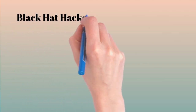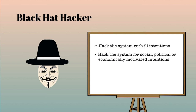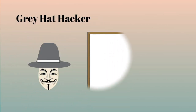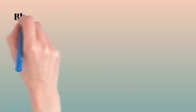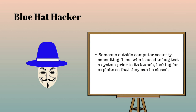Blackhat hackers — in contrast to whitehat, blackhat hackers hack the system with ill intentions for social, political, or economically motivated purposes. They identify security loopholes and keep the information to themselves, exploiting the system for personal or organizational benefits until the compromised organization becomes aware and applies security patches. They are popularly known as crackers. Grayhat hackers — they find security vulnerabilities and report to site administrators, offering to fix the security bug for a consultancy fee. Bluehat hackers — a bluehat hacker is someone outside computer security consulting firms who is used to bug-test a system prior to its launch, looking for exploits so they can be closed.